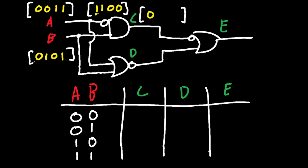What's the next pair? We have 1 and 1 — 1,1 in an AND gate gives you 1. So far, AND outputs are 0,1. Then 0,0 is just 0. And 0,1 is just 0 for the AND gate. So C right here is just 0,1,0,0.